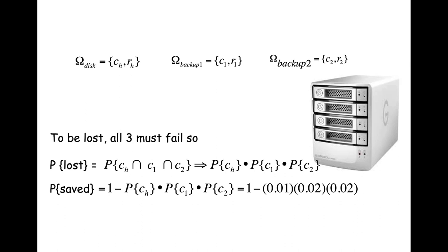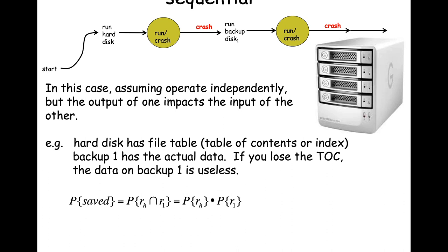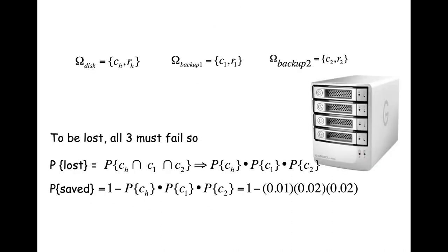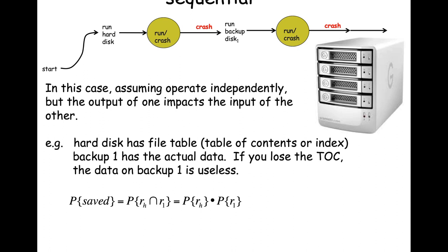We also considered a simpler approach by looking at the dual — the probability that information was lost: the probability that the hard drive crashes and at the same time the first and second backup crash. This illustrates that in many problems it's far easier to compute a probability by looking at one minus its negation. The probability of saved equals one minus the probability of information being lost. We then looked at parallel circuits as a way of encoding parts that do not interact.